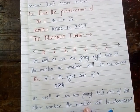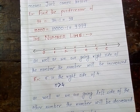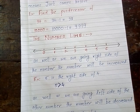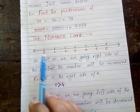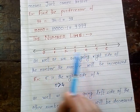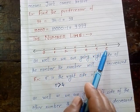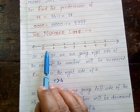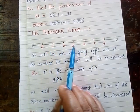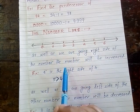Now let us discuss the number line. For making a number line, first we draw one line. After drawing the line, we apply some consecutive whole numbers: 0, 1, 2, 3, 4, 5, 6. As you are looking in this number line, as we go to the right side, the number will be increased. For example, 2 is to the right side of 1, so 2 is greater than 1. 4 is to the right side of 3, so 4 is greater than 3. 5 is to the right side of 4, so 5 is greater than 4.